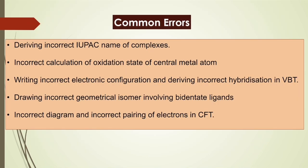Common errors in coordination compounds: students often commit mistakes in deriving the correct IUPAC name of the complex, in calculating the oxidation state of the central metal atom, and in writing the electronic configuration and deriving the correct hybridization when using VB theory. They also draw incorrect geometrical isomers in the case of bidentate ligands and make errors in electron pairing while drawing crystal field splitting diagrams.